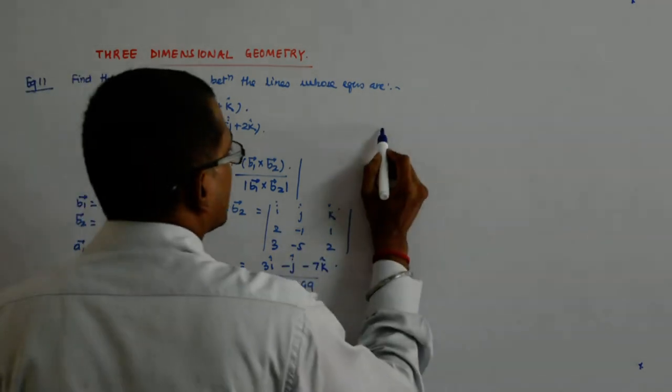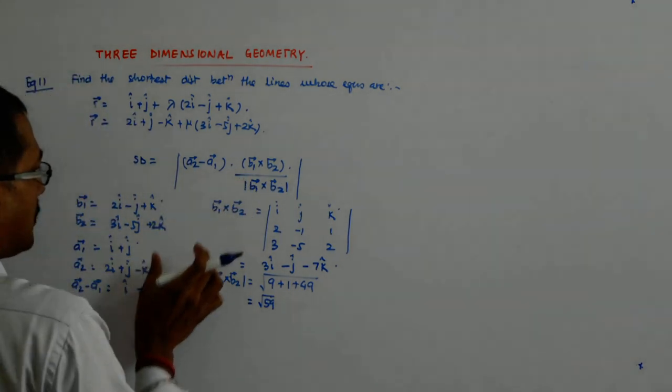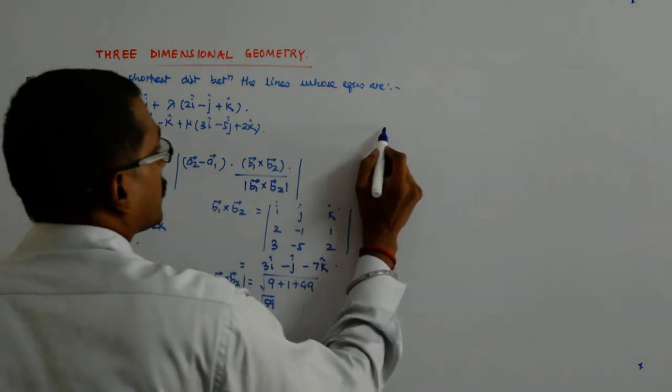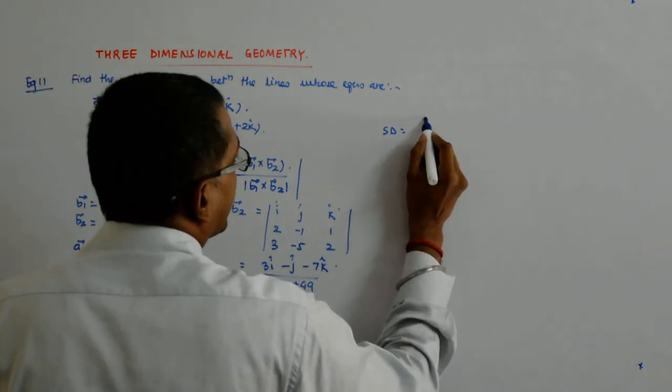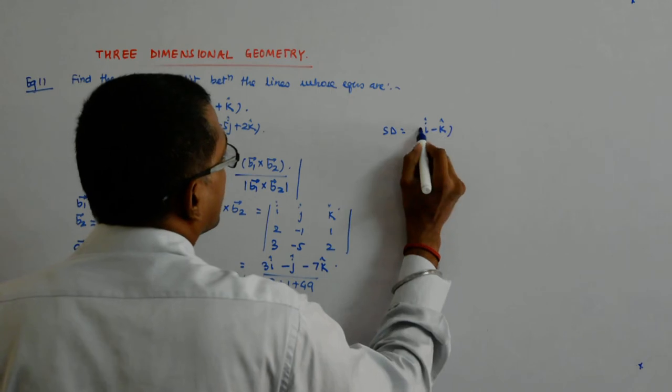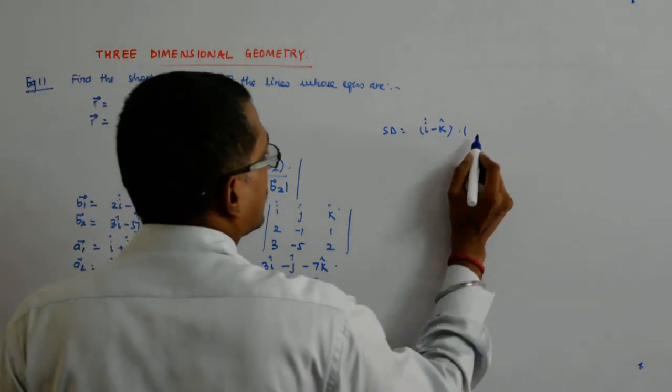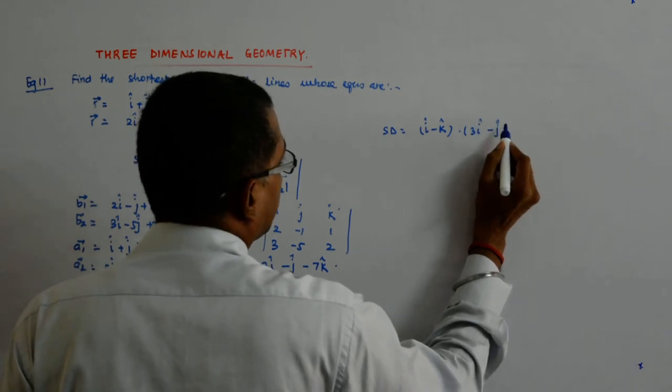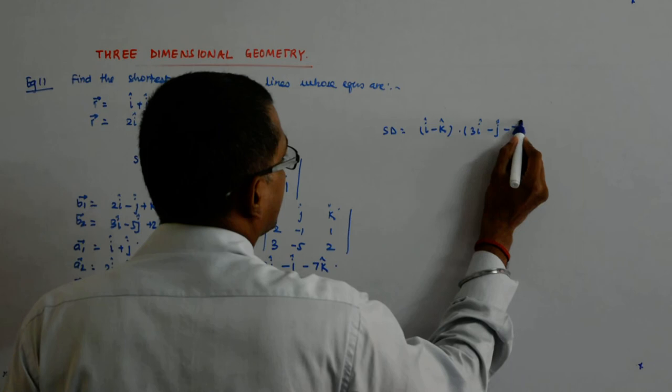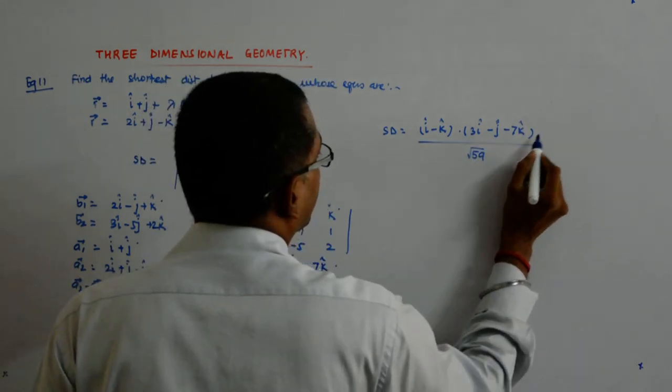So, what is A2 minus A1 dotted with this? So, I get, you see, I am plugging in all of them into this. So, my sd is A2 minus A1 is i minus k dotted with this, B1 cross B2, 3i minus j cap minus 7k cap divided by root over 59 mod.